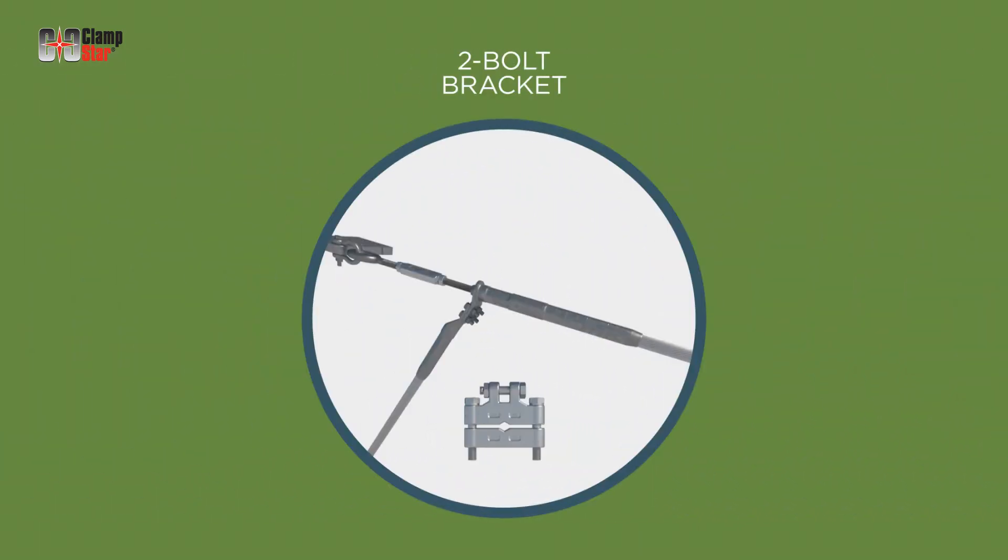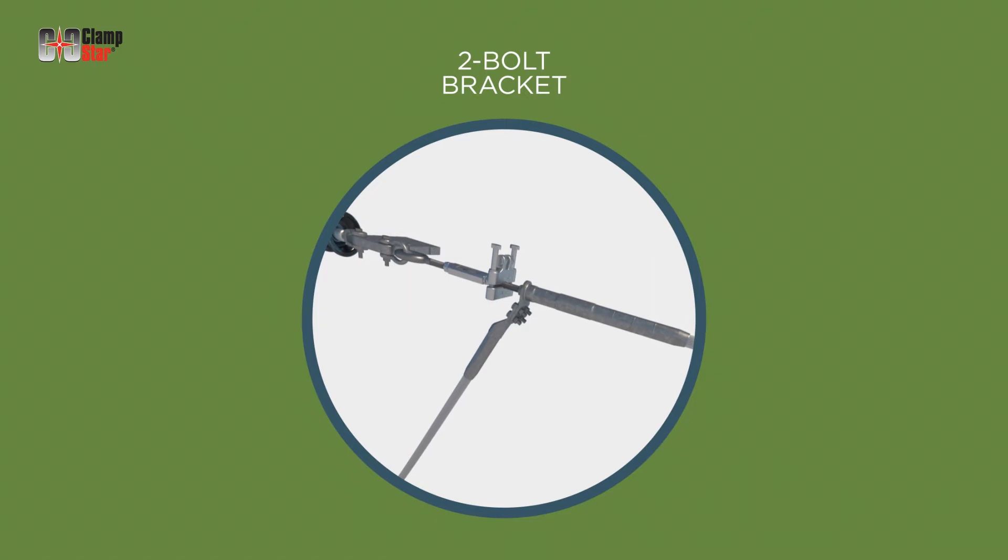When installing the two-bolt universal eye bracket, position the bracket securing it with the bolts and washers. Alternate the tightening sequence and steps between bolts to achieve an evenly distributed clamp load. The recommended torque on the three-quarter inch bolt is approximately 40 foot-pounds.